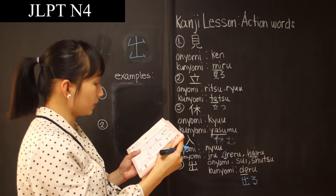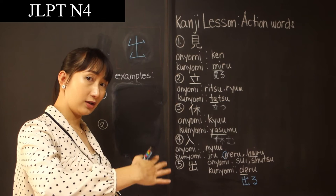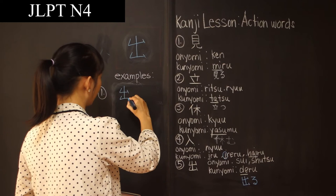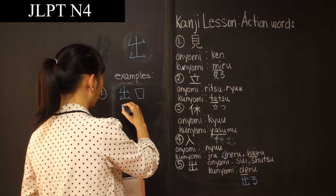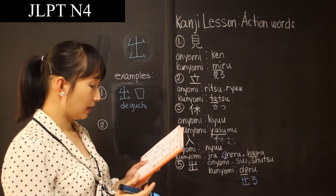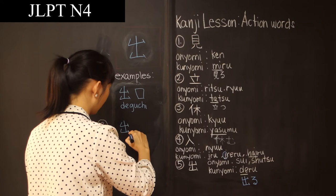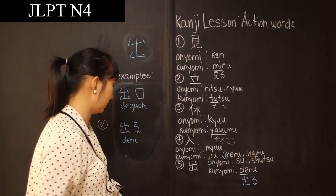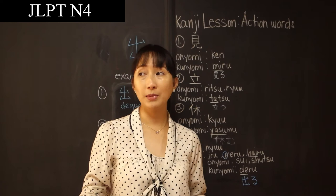The examples I have for you are Deguchi. If we have entrance which is Iriguchi, we have Deguchi — De, then Kuchi or mouth. This is exit: Deguchi. The other example is Deru, which means go out. For example, I want to say to my kids: 'Ima kara deru yo' — I'm gonna go out now. That is how we use Deru.